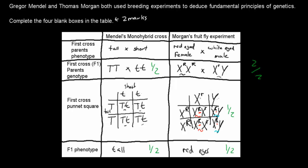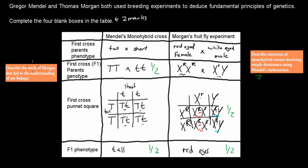And where did this question come from? It came from these dot points: describe the work of Morgan that led to the understanding of sex linkage. This was from Morgan's work on sex linkage, that exact experiment. And the other part came from: describe outcomes of monohybrid crosses involving simple dominance using Mendel's explanation. This was an example of a simple dominance monohybrid cross.